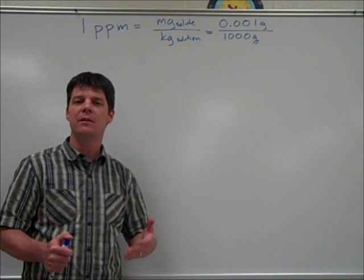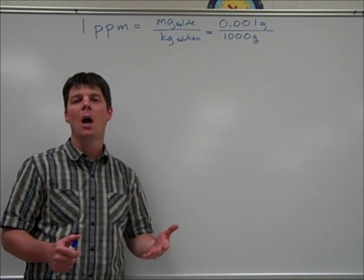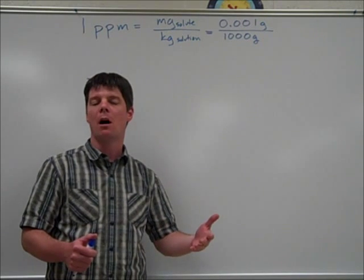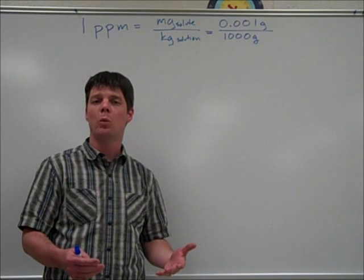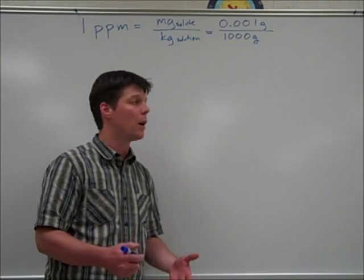The EPA website will list the information about barium in a slightly different way. They're not using parts per million. What they will provide is how many milligrams of contaminant are present in one liter of solution. So the EPA website will say that there are two milligrams of barium in one liter of water.